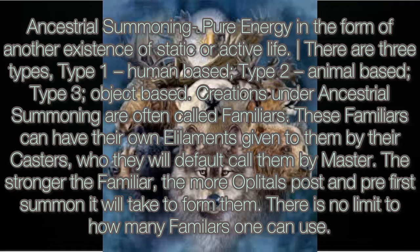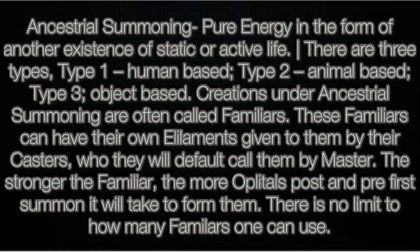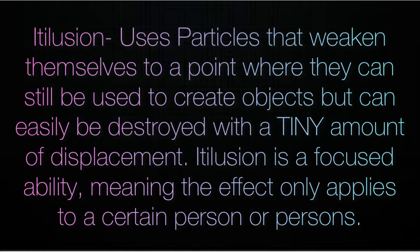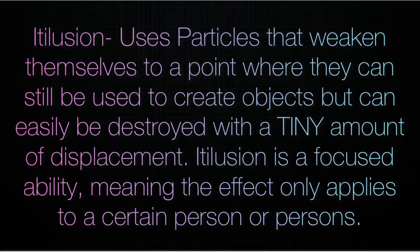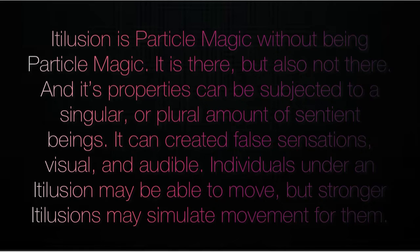Ancestral summoning is pure energy in the form of another existence of static or active life. There are three types: type one is human-based, type two is animal-based, and type three is object-based. Creations under ancestral summoning are often called familiars. These familiars can have their own elements given to them by their casters, who the familiars will call master by default. The stronger the familiar, the more oplotals post and pre first summon it will take to form them. There is no limit to how many familiars one can use. Illusion uses particles weakened to a point where they can still be used to create objects but can be easily destroyed with a tiny amount of displacement. Illusion is a focused ability, meaning the effect only applies to a certain person or persons. It can create false sensations, visual and audible; individuals under illusion may be able to move, but stronger illusions may simulate movement for them.